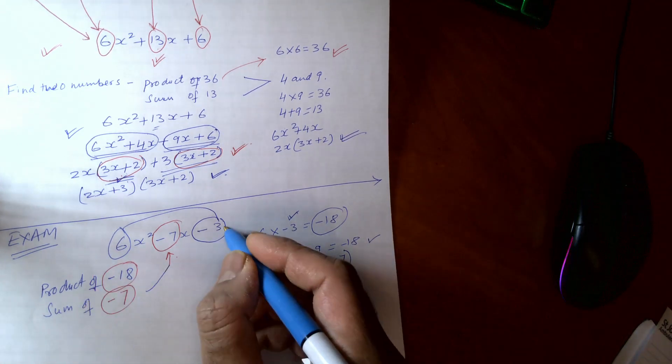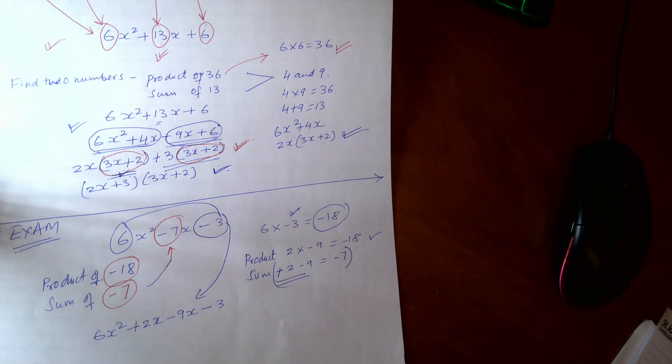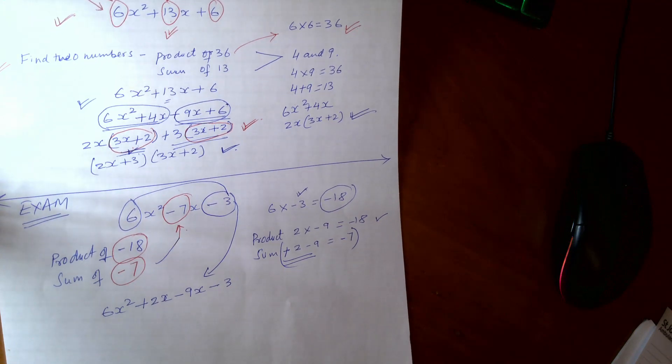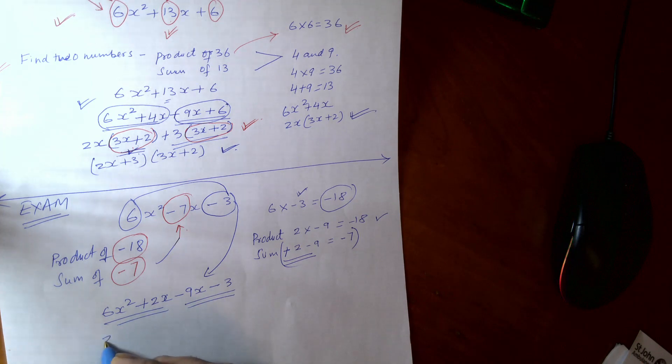So now, we're going to write this equation again here. So we got here 6x squared plus 2x minus 9x minus 3. Now this is the equation we get. Now again, we have to solve this. To solve this, how we can do that? So we can take 2x out, and that will give us 3x plus 1.